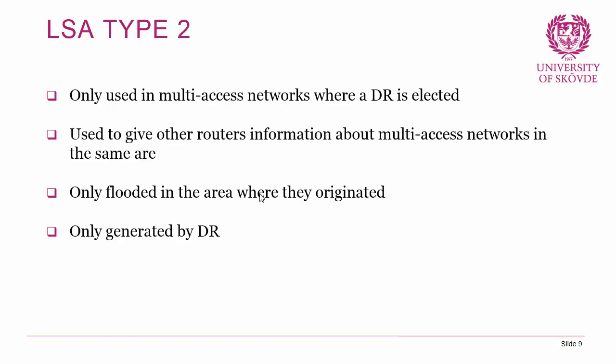LSA type 2 is only used in multi-access networks where a designated router is selected. Multi-access networks are links where more than one router can be connected across the same link, such as an Ethernet network. Type 2 LSAs give other routers information about multi-access networks in the same area, are only flooded in the area where they originated, and are only generated by the designated router.